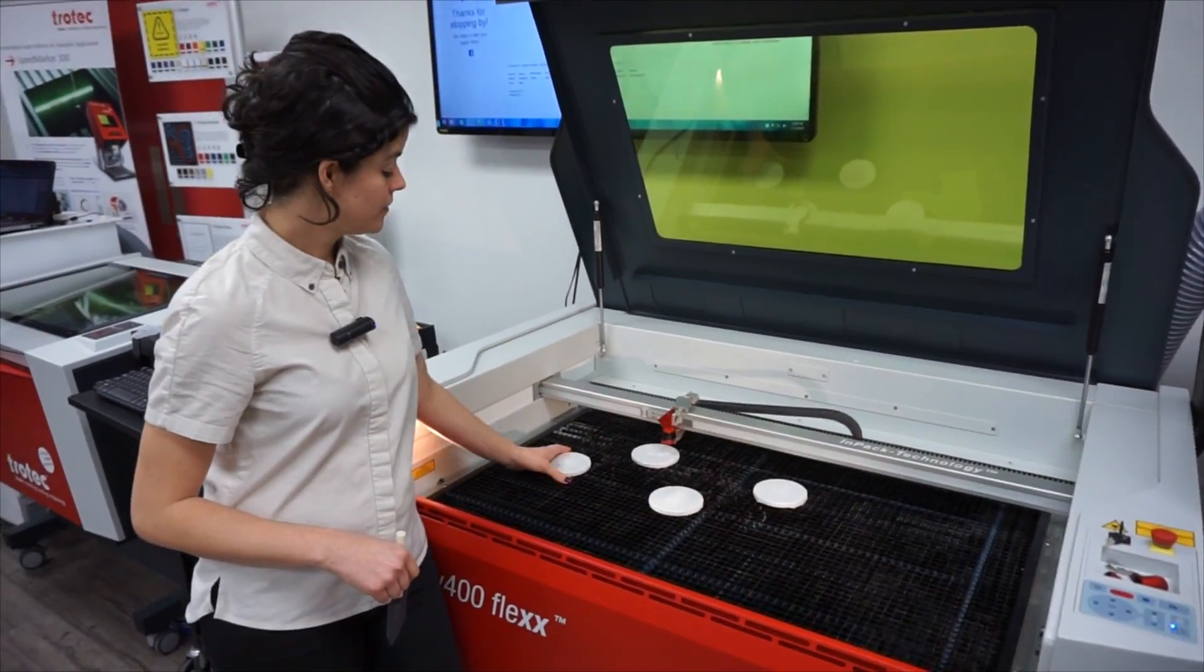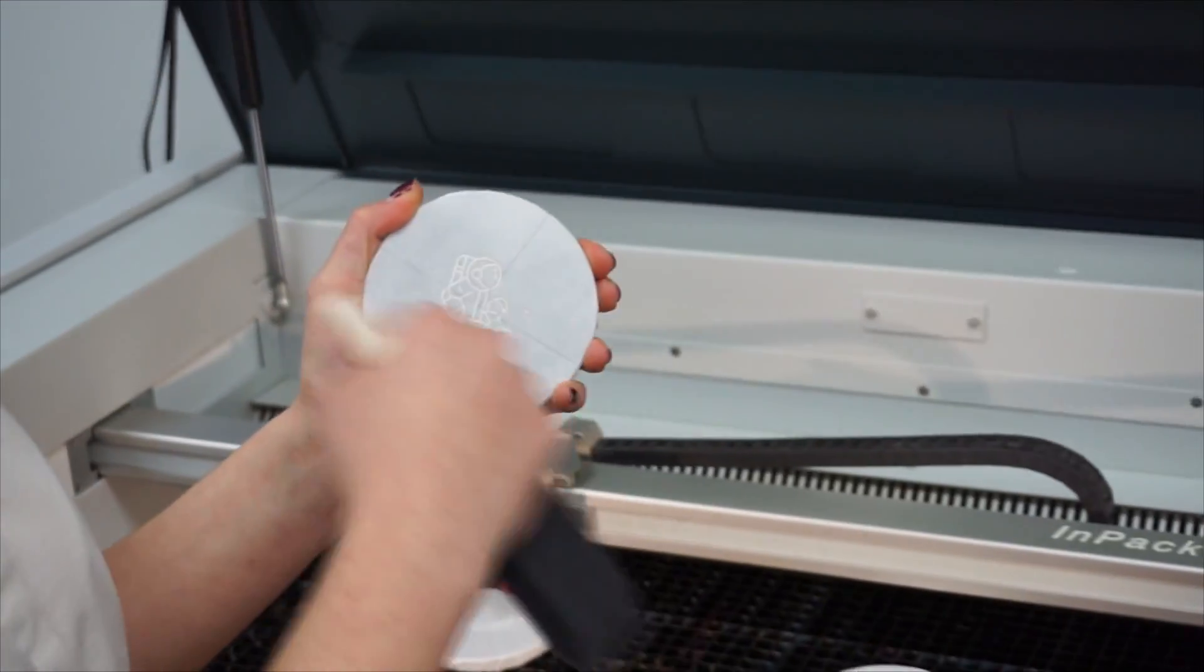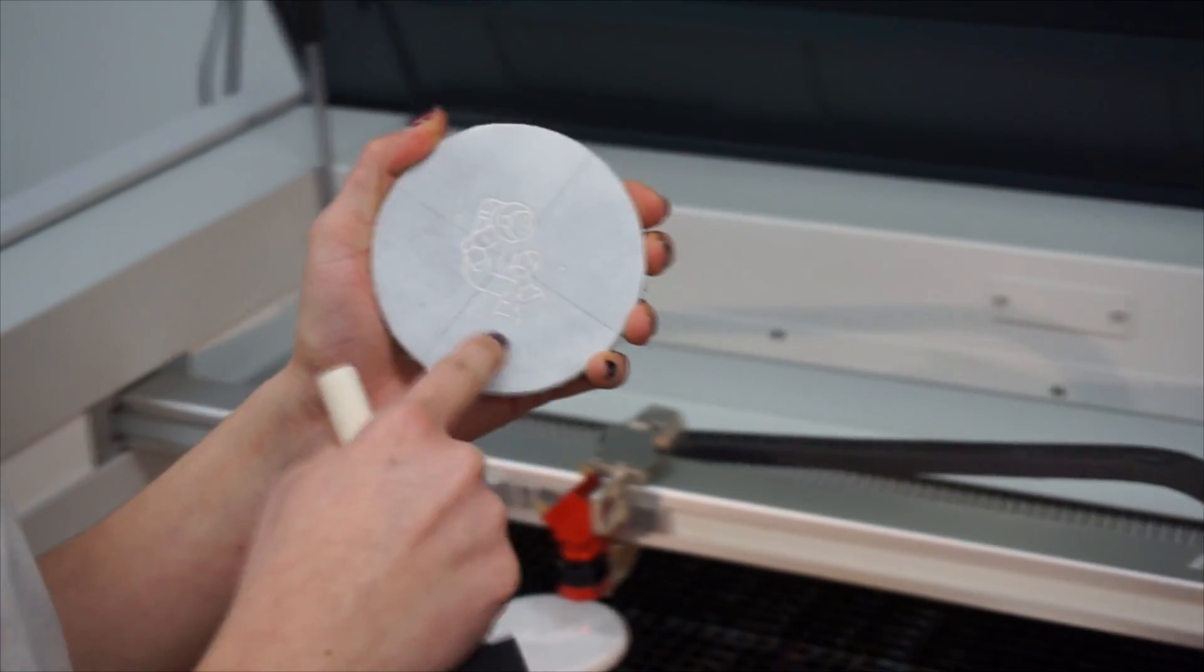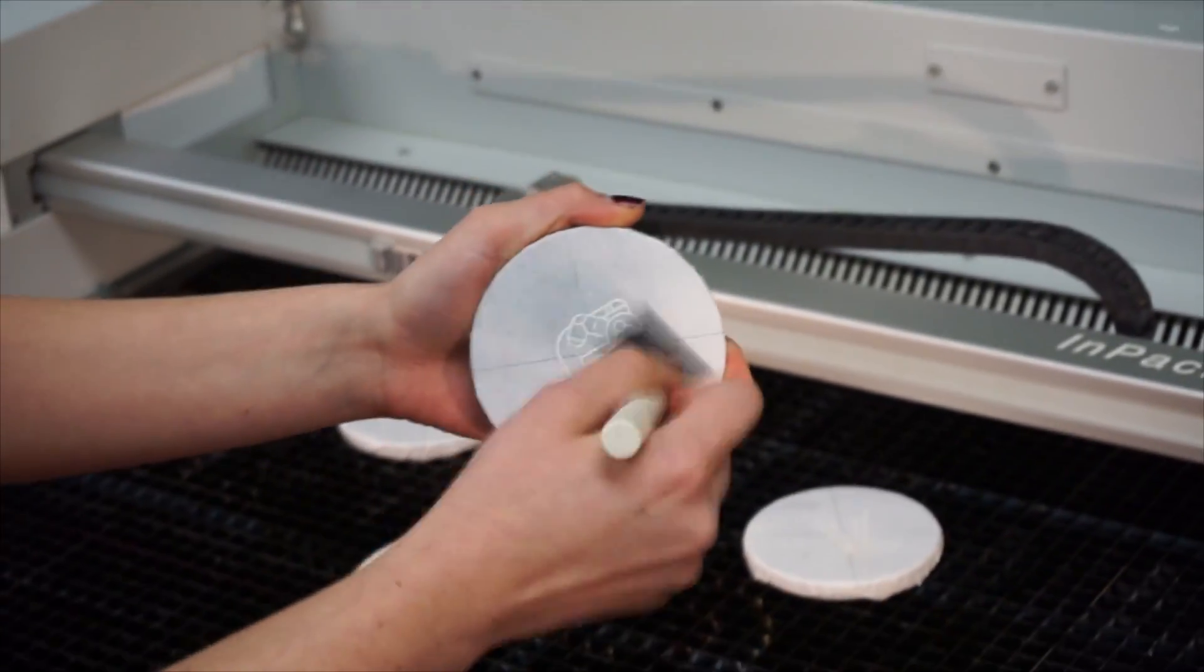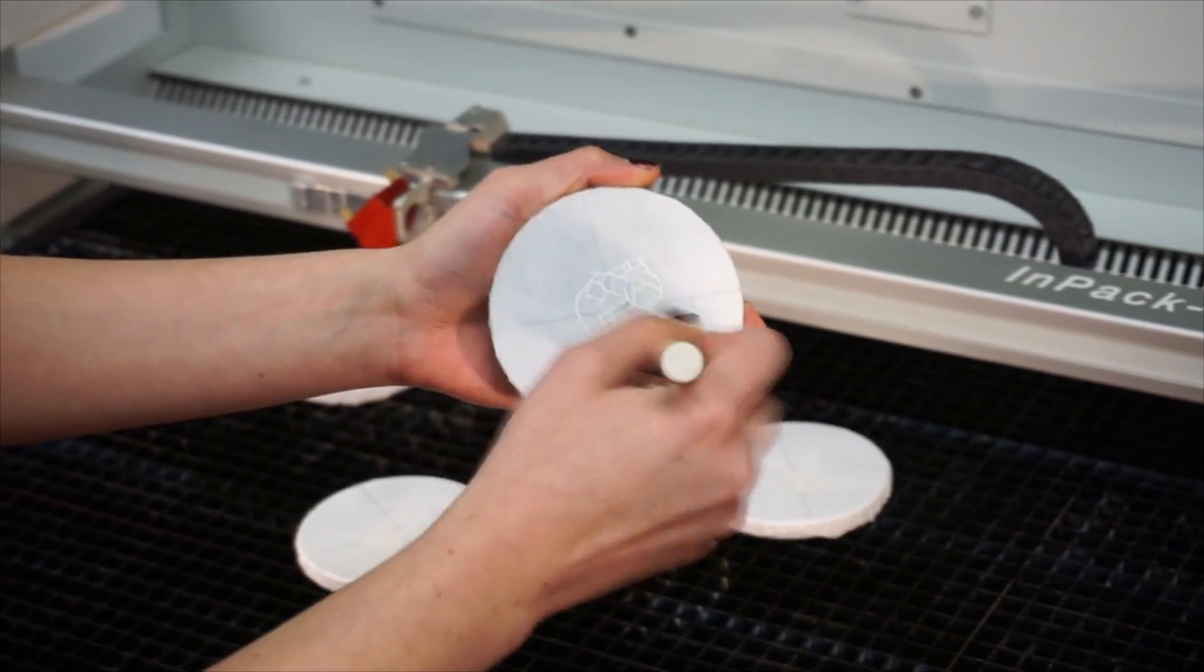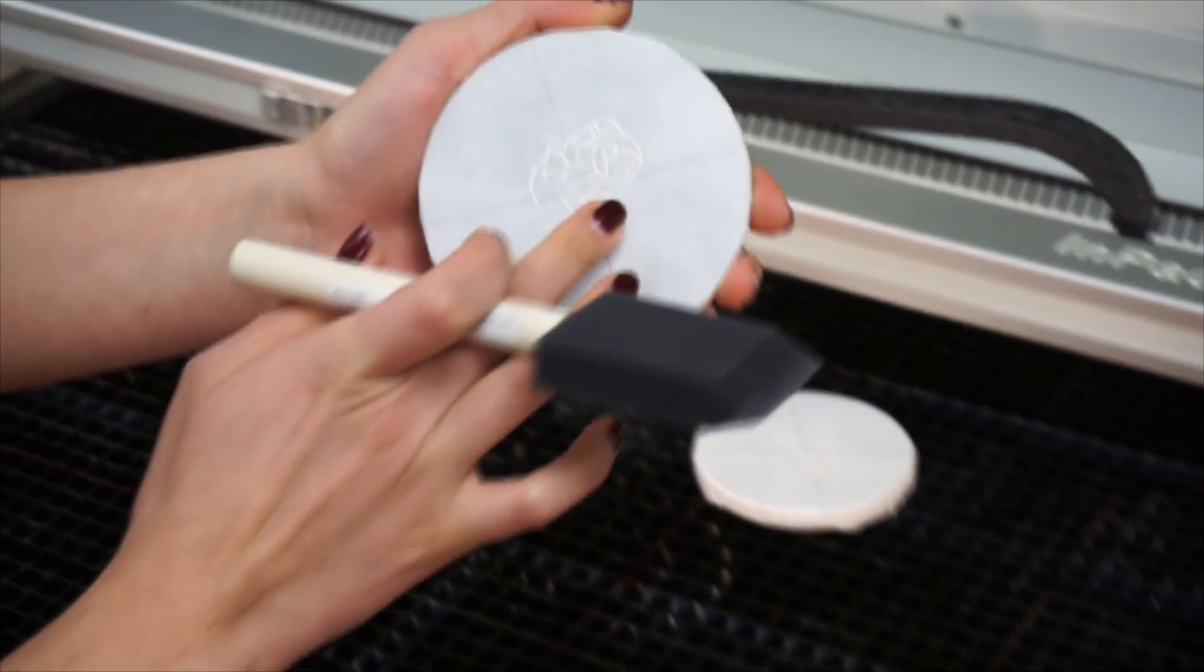Once your coasters are done engraving, you want to take away the marble dust that has accumulated right in the lines of your design. So you can use a clean brush and just take away, being careful not to pull off the paper itself.